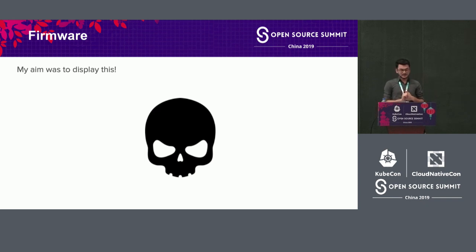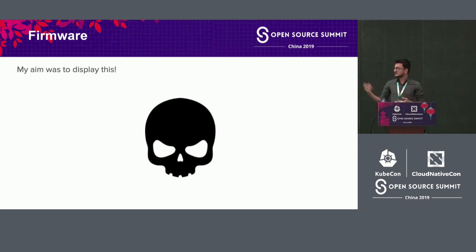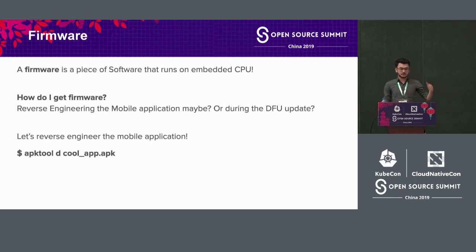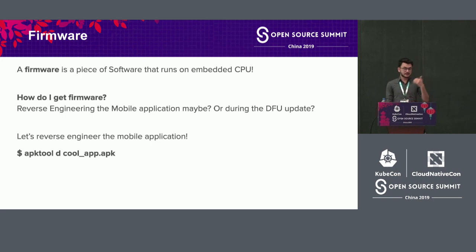The next thing I wanted to do was something with the firmware. I saw many people using fitness trackers and thought — why not scare somebody with custom icons or images? Firmware is a piece of software that runs on an embedded CPU, typically written in C, compiled into binary, and loaded into a device using a programmer or wired connection. How do you get the firmware? One option is reverse engineering the mobile application and looking into the asset directory.